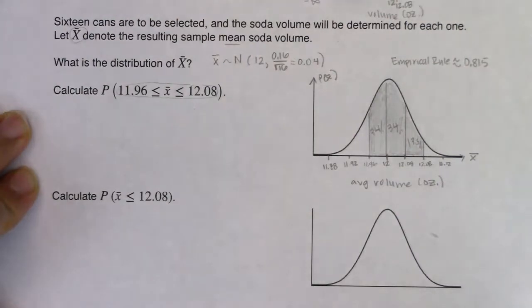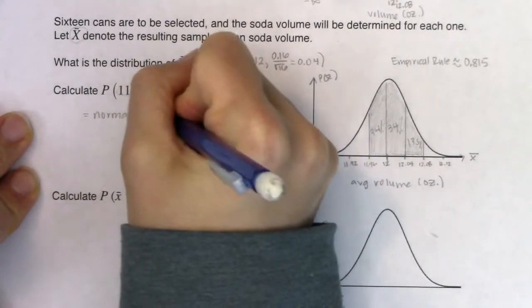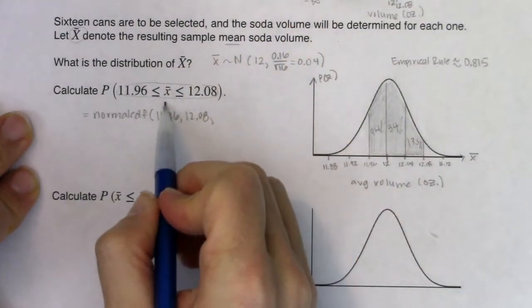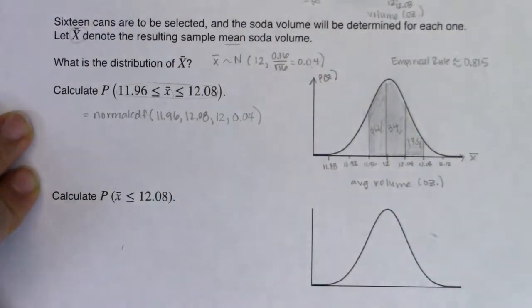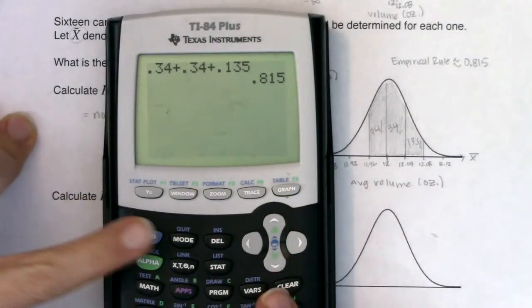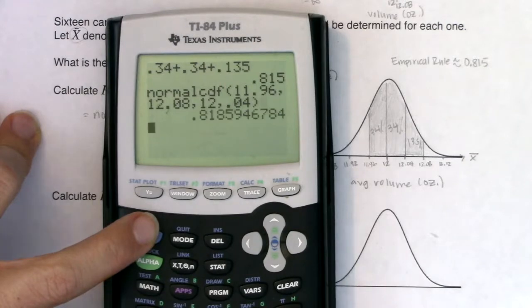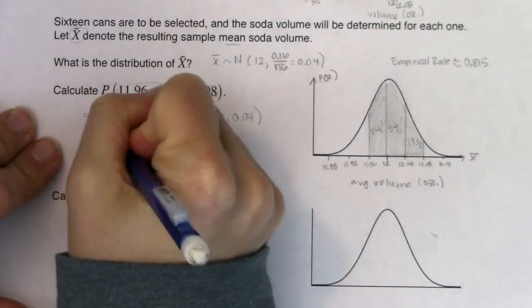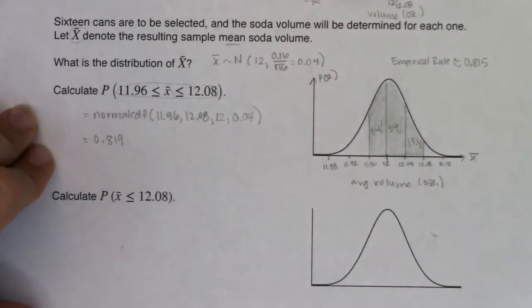Let's go ahead and use normal CDF because it's more accurate. Normal CDF of low, high — now be careful, we're talking about x-bars. Our mean was the same as our population distribution but our standard deviation got smaller, going to 0.04. So this is normal CDF of low, high, mean 12, standard deviation 0.04, and you see the probability kicking in at 0.819 — about 82% there.